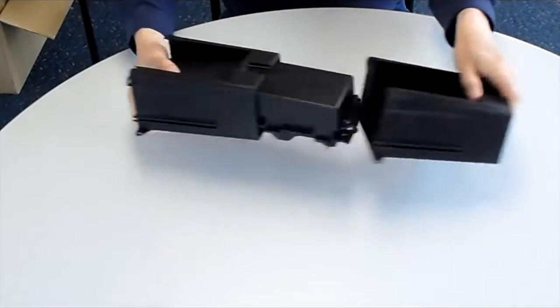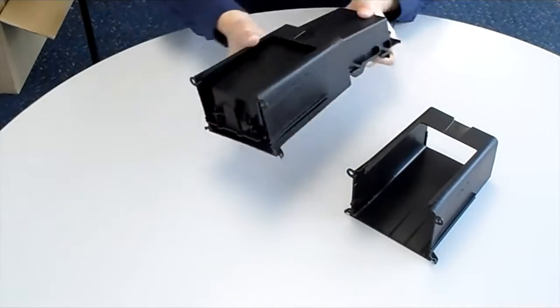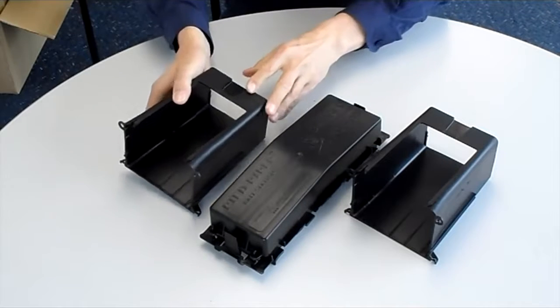The first stage of the assembly process is to pull each tunnel off the main assembly as shown here. You will now have three separate parts.